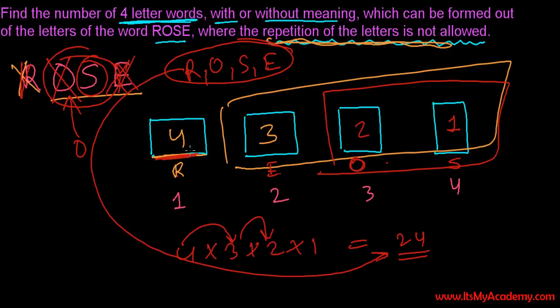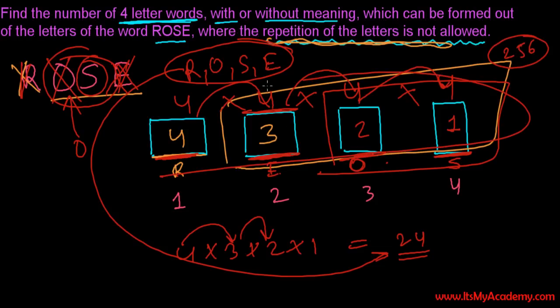If letters are allowed to repeat, then the first position can be filled by four ways. And letters are allowed, so again this can be filled by four ways, this can also be filled by four ways, this can be also filled by four ways. So four times four times four times four is 256. That time we had 256 ways of filling this four space or making four letter words with or without meaning if repetition is allowed. But when repetition is not allowed we had only twenty-four options, and that's our answer.